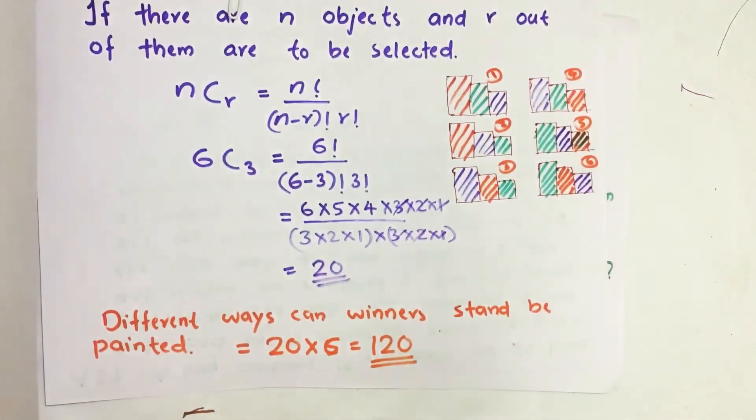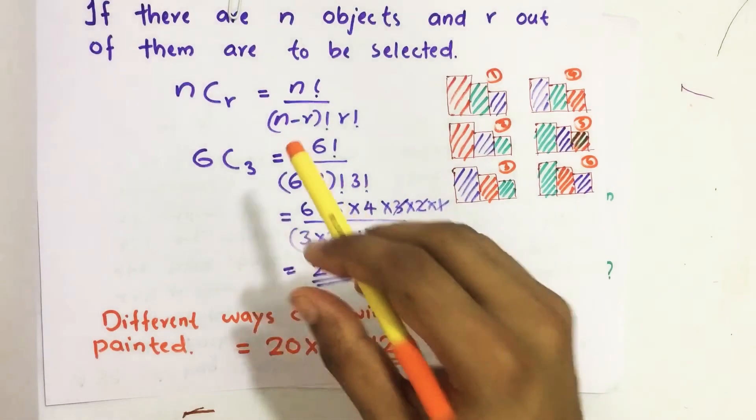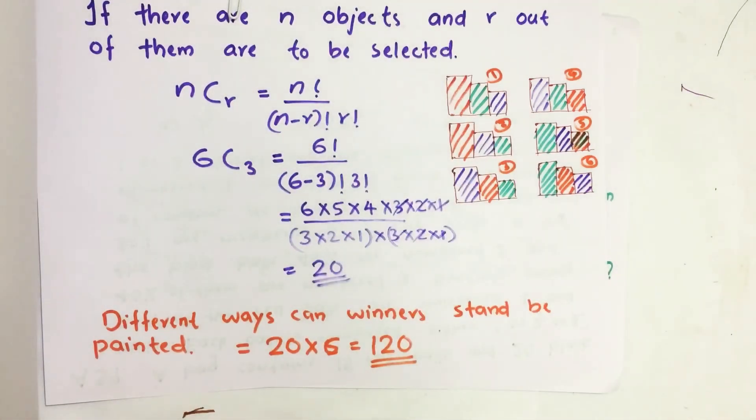So the total ways we can arrange these six colors choosing three at a time, the different ways the winner stand can be painted equals 20 × 6 = 120. So our answer is 120.